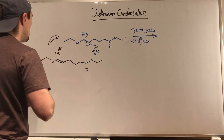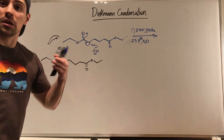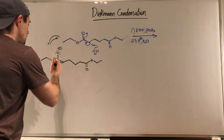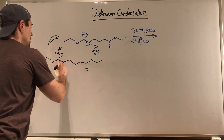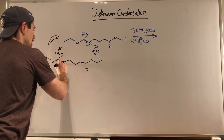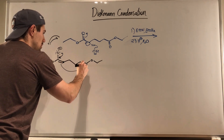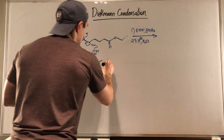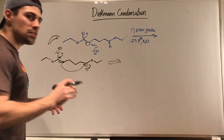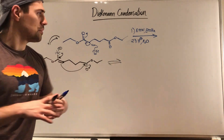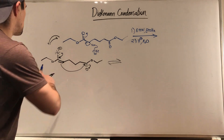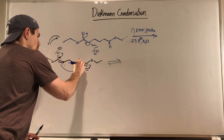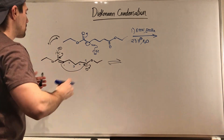So we have the ester enolate and we also have the ester — so let's do some attack. Electrons swing down, the alpha carbon attacks the carbonyl carbon, electrons swing up. At this point things are gonna get a little kooky, so let's stay organized. We just made a ring — one, two, three, four, and five. A five-membered ring.